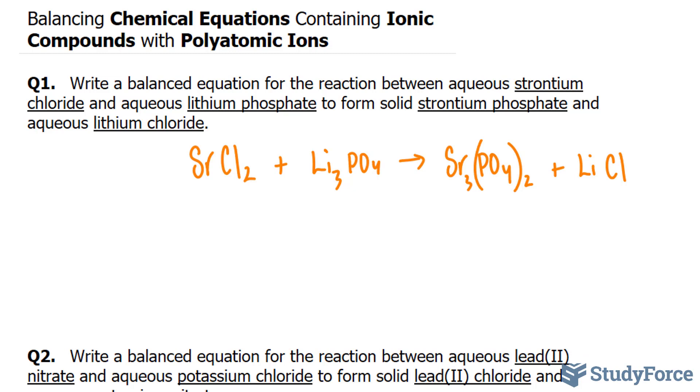And unlike before, whenever you have a polyatomic ion, you want to treat it as if it's its own element. For example, we want to write down Sr, Cl, Li, and the PO4 will be treated as its own element. The same elements will be on the right side: Sr, Cl, Li, and PO4.